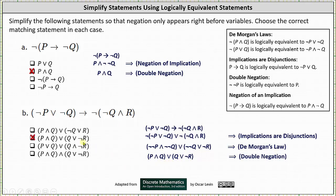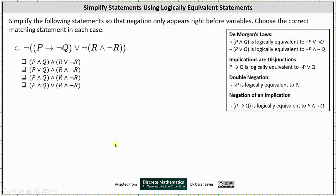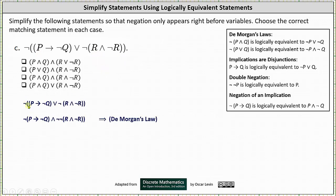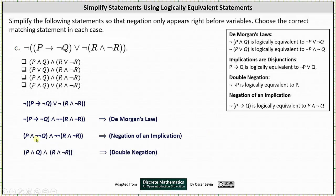Looking at our choices, that is the second choice. For part c, we have the negation of 'if p then not q' or 'the negation of r and not r.' Notice the negation is outside the outermost parentheses, and therefore we apply De Morgan's Law. The negation passes through the first set of parentheses and applies to the implication 'if p then not q'; the or changes to and and we negate the negation of r and not r. Next, the negation of the implication 'if p then not q' gives us p and the double negation of q. Finally, simplifying the double negations gives us p and q and r and not r.